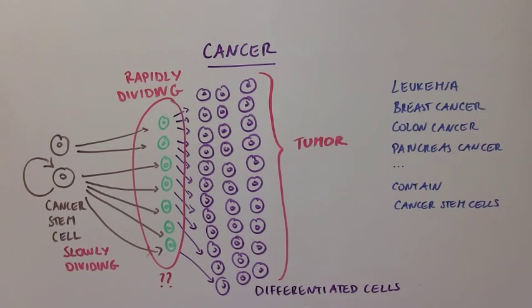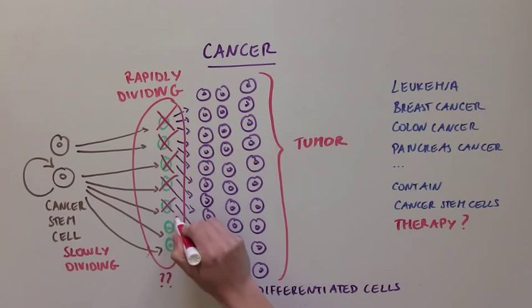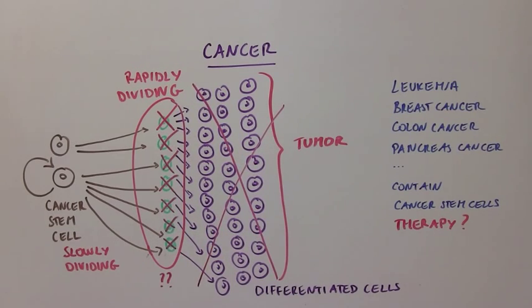So what does this mean for therapy? Most cancers are treated with chemotherapy, which kills cells that divide and make more cells. Well, chemotherapy would efficiently kill the green dividing cells, and eventually the purple differentiated cells, since they would not be replenished by the green cells.